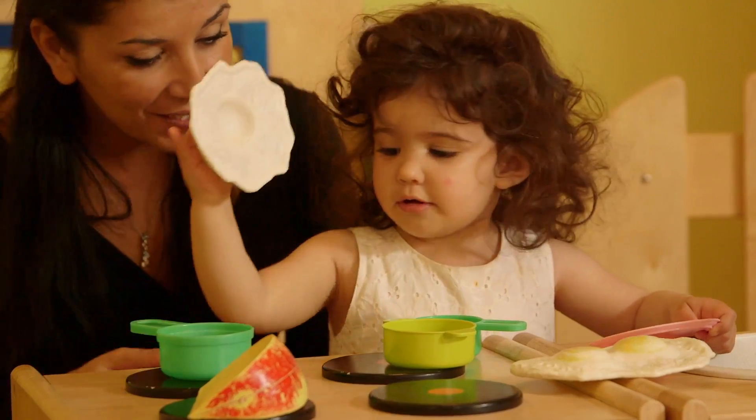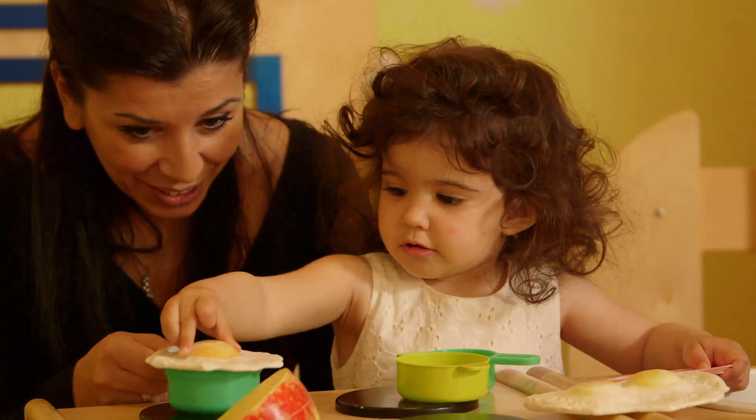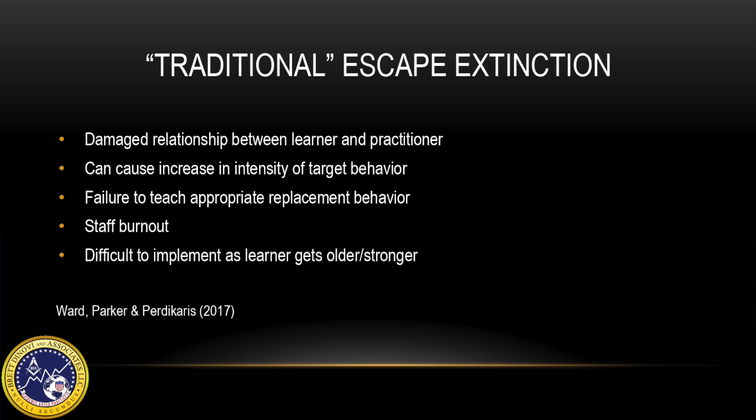Oftentimes, traditional escape extinction procedures are implemented when learners are young and easier to move or redirect. However, in using such procedures, appropriate replacement behaviors are often never taught. This is not only a major disservice to the learner, it also poses dangerous situations for both staff and the learner as the learner gets bigger and stronger and it is no longer possible to physically prompt or redirect. One question to ask yourself before using a more traditional escape extinction procedure is: would you use this procedure with a neurotypical individual? If the answer is no, then I highly recommend you consider why you are using it with your learner.